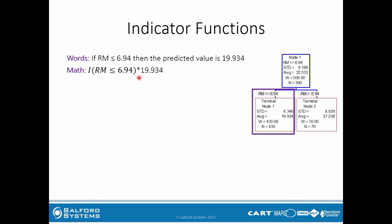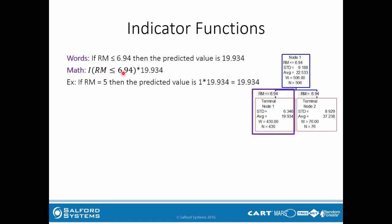To show that's equivalent, if RM were 5, we can just go down the tree. Since RM is 5, we go left because it satisfies this condition, and the predicted value would be 19.934. Mathematically, we plug 5 into RM: 5 is less than or equal to 6.94, which is true, so the entire indicator function takes the value of 1. Then we have 1 multiplied by 19.934, which equals 19.934.